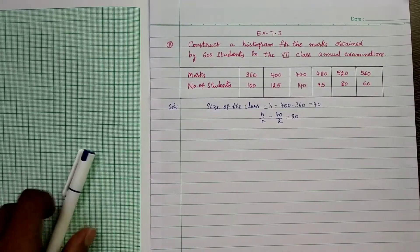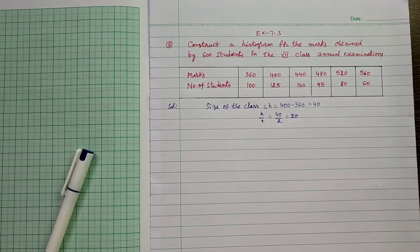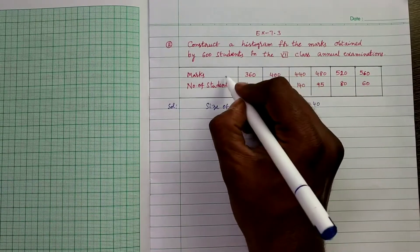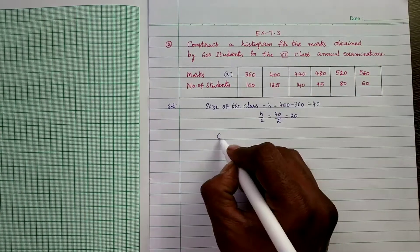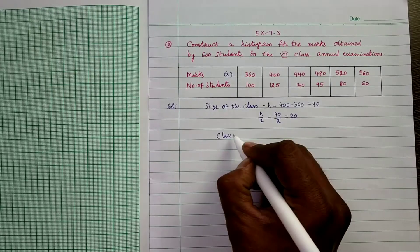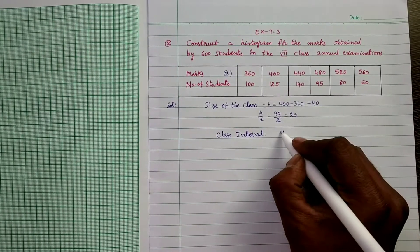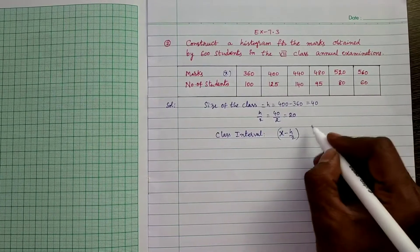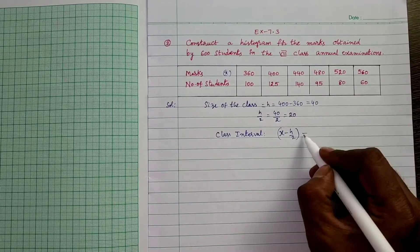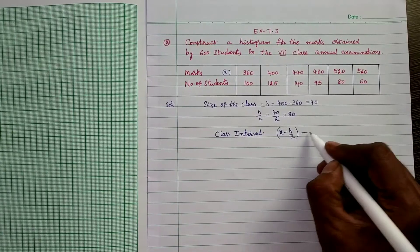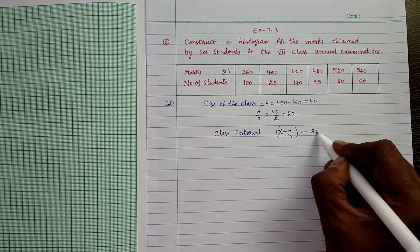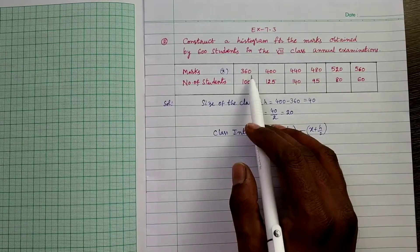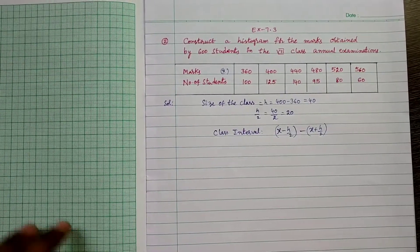So how can we construct the class interval? Class marks are considered as x. The class interval is constructed using the formula: lower limit = x minus h/2, upper limit = x plus h/2. Using this formula we can construct the class intervals of the given data.